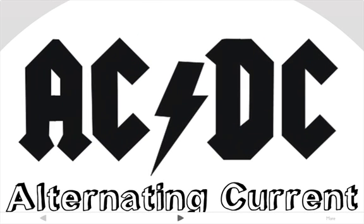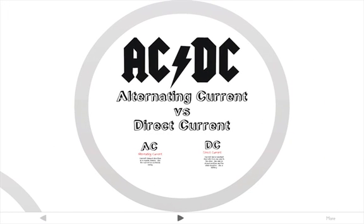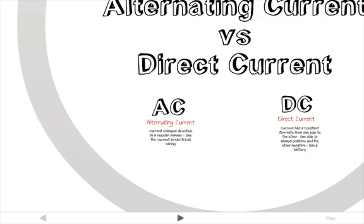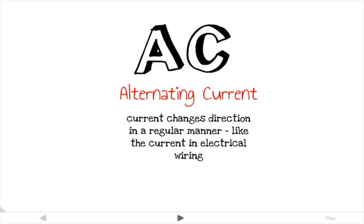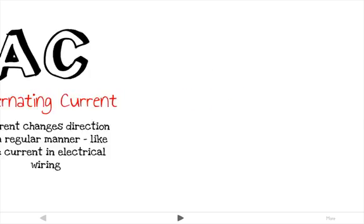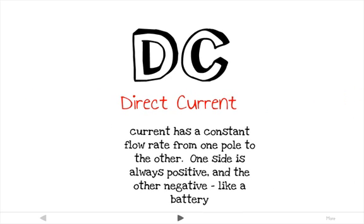There are two types of current: alternating current and direct current. Alternating current is when the electrical current changes direction in a regular manner, so it goes back and forth. Direct current has a constant flow rate from one source, such as a battery, where one pole is always positive and one is always negative.